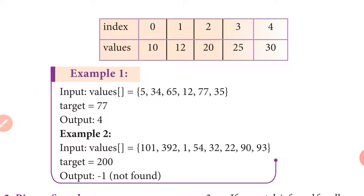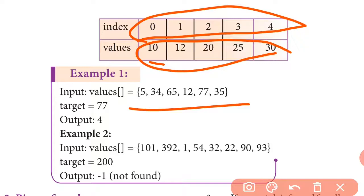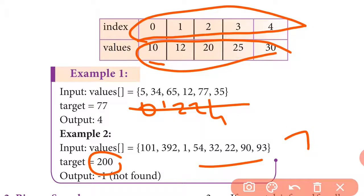For example, with values one, two, three, four, five — five values — the index numbers always start from 0: 0, 1, 2, 3, 4. You input a target value, for example 77. The output shows which index position the value is found at. If the target is 200 and it is not in the array, the result is 'not found'.